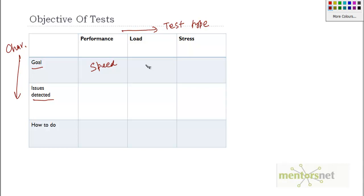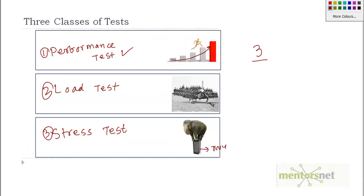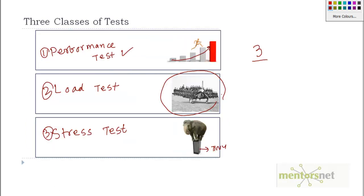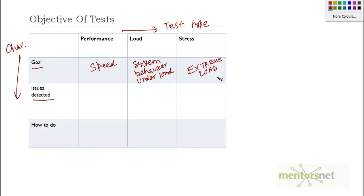For load testing, we look at system behavior under load — like this aeroplane sustaining many users. The goal of a load test is to understand how the system behaves under load. The goal of stress testing is to understand what happens under extreme load — for example, putting an elephant on it. It may be slow, but it's not supposed to break down. That is the understanding we get from stress testing.